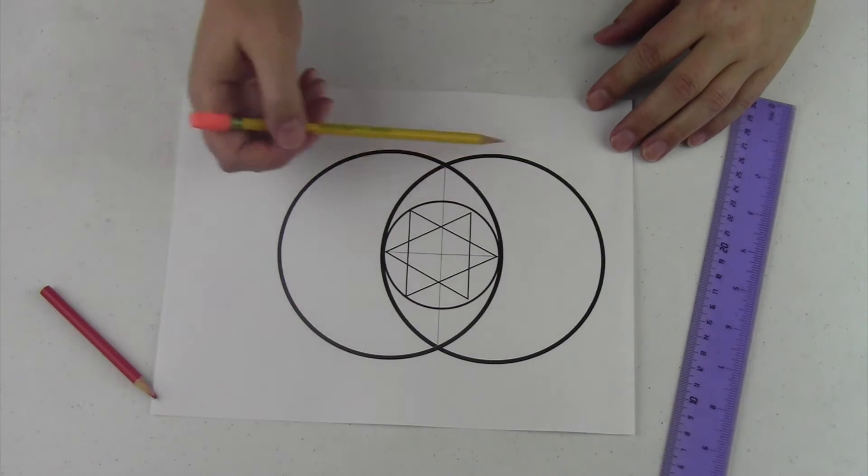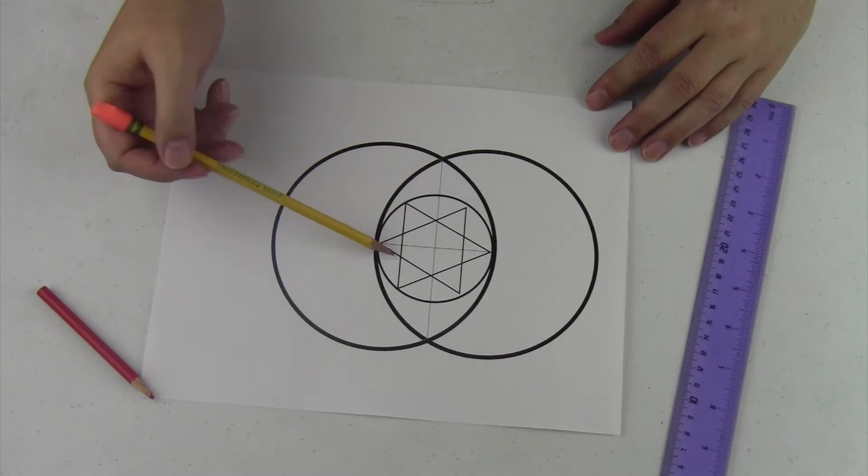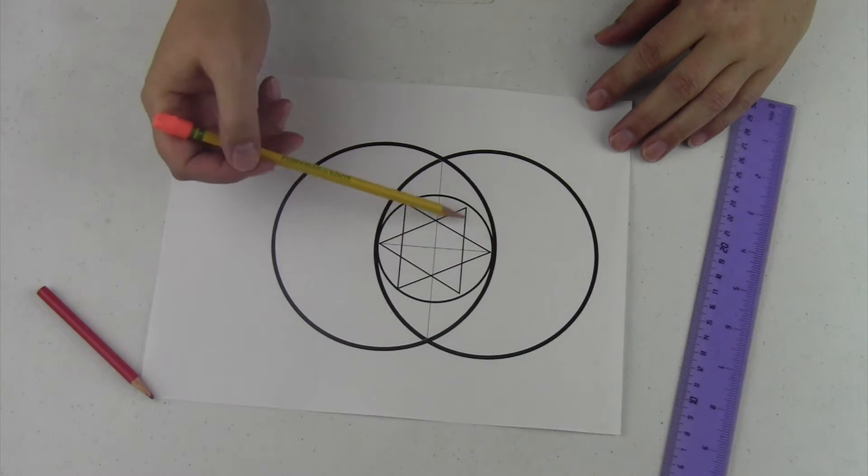First we've got the Vesica Pisces here, we've got our cross-section, and we've got these two overlapping triangles. This is how you start the nonagon.